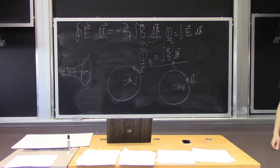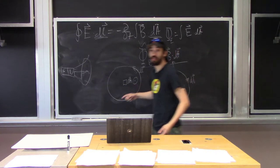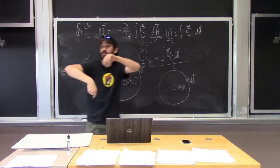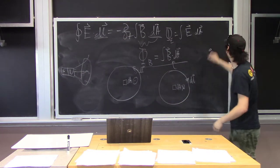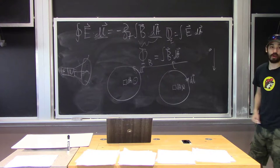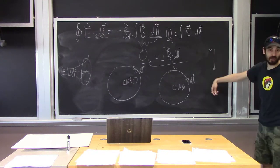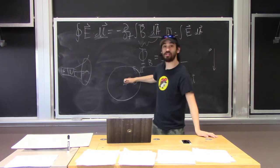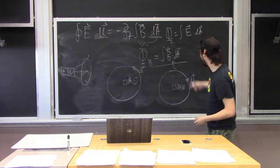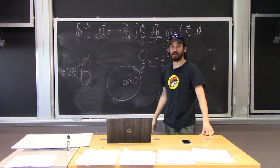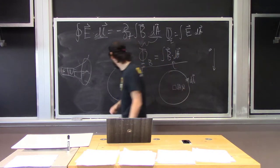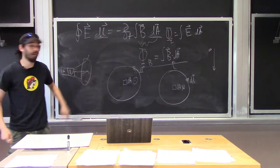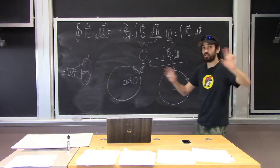Student: How do you know which direction your dA's are moving? Instructor: It's a choice — like choosing whether up or down is positive when dropping a ball. You choose dA to be either out or in, and that fixes what dl must be. The way I typically do it is to choose dA in the same direction as the magnetic field, so that when I take the dot product it's positive. But that's a choice.